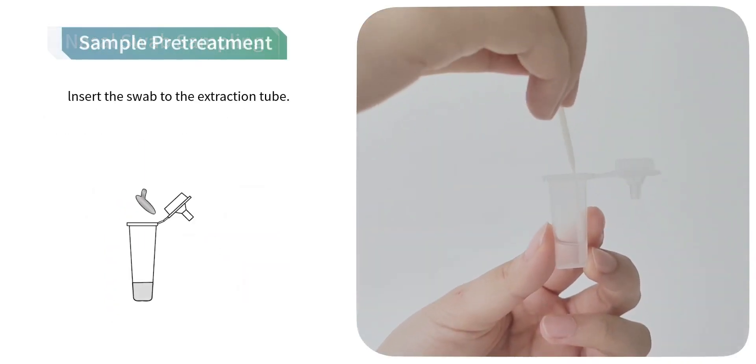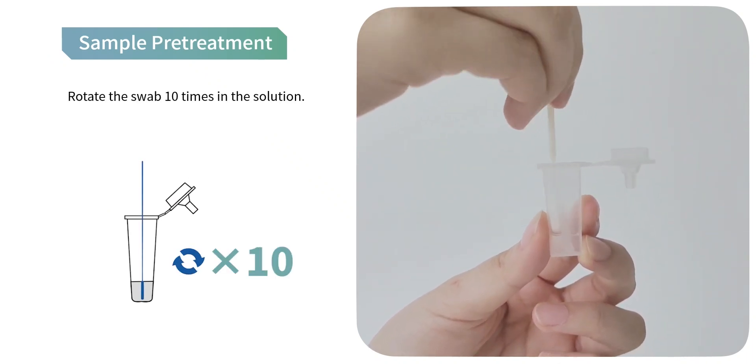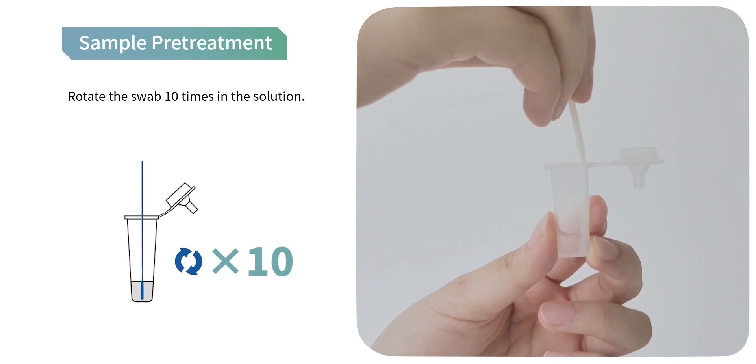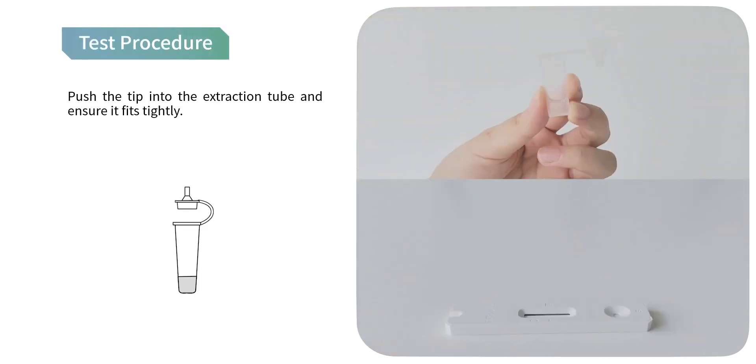Sample pretreatment: insert the swab into the extraction tube, rotate the swab 10 times in the solution, and squeeze the swab tip along the inner wall of the extraction tube 3 times.